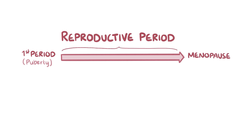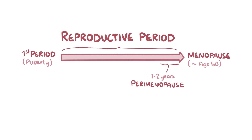Menopause usually sets in around age 50, and it's preceded by a couple of years of hormonal and physical changes, and this is called perimenopause. To be more specific, a woman has entered menopause when an entire year has passed since her last menstrual period.